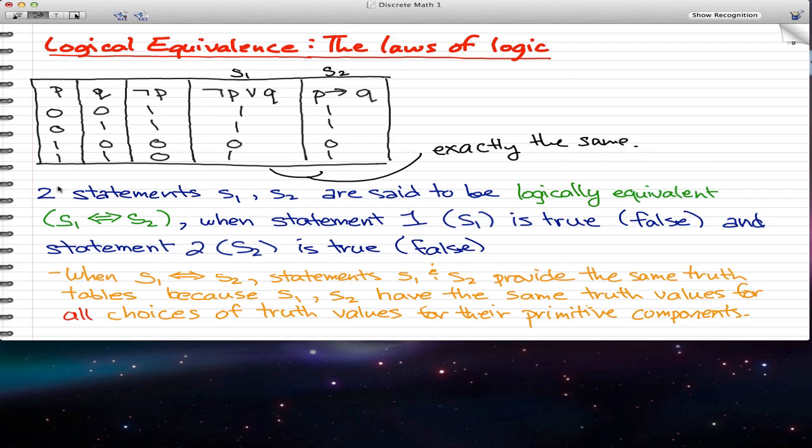So when two statements, s1 and s2, are said to be logically equivalent, and this is the symbol for logical equivalents, s1 double arrow s2. They're called logically equivalent when statement s1 is true, respectively false, and statement s2 is true and respectively false.